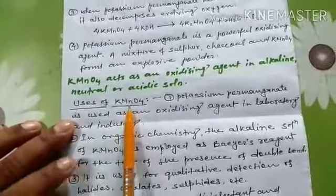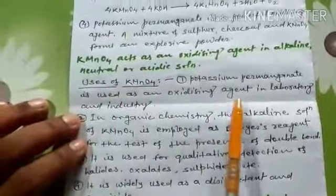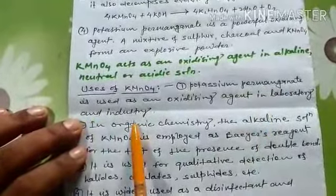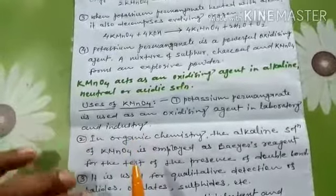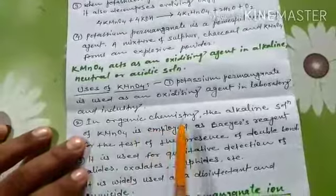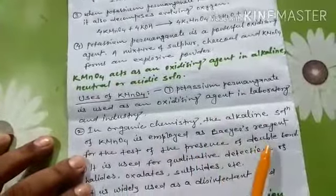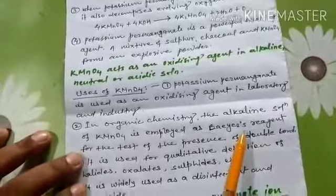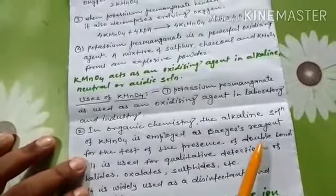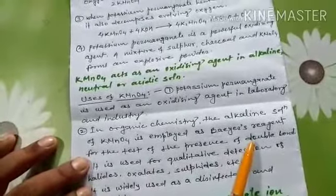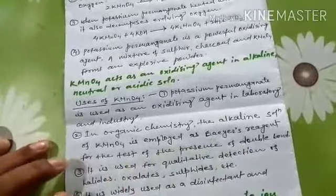Uses of potassium permanganate: Potassium permanganate is used as an oxidizing agent in both the laboratory and industry. In organic chemistry, the alkaline solution of KMnO₄ is used as Baeyer's reagent. Baeyer's reagent is used for the test for the presence of a double bond, meaning it is used to test for alkenes.